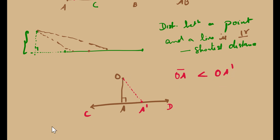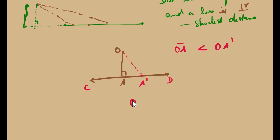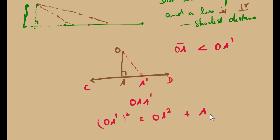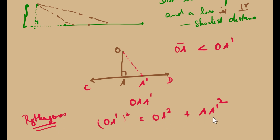By doing so, we have formed a right-angle triangle OAA'. We can apply the Pythagorean theorem in this right-angle triangle: the square of the hypotenuse, OA'², equals OA² plus AA'². All of us know this statement is correct because the Pythagorean theorem is applicable to all right-angled triangles. But what does this statement tell us now?